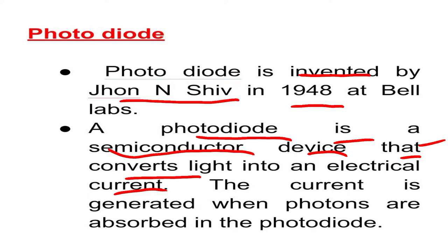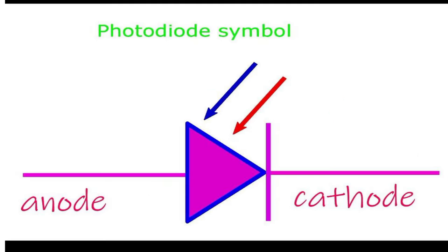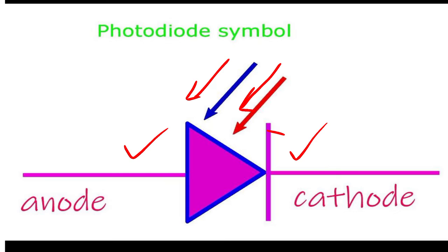The current is generated when photons are absorbed in the photodiode. Whenever light strikes the photodiode, it absorbs the photons and produces electricity. The symbol of the photodiode has an anode, a cathode, and two arrows indicating light falling on the photodiode.